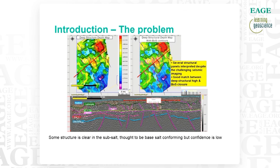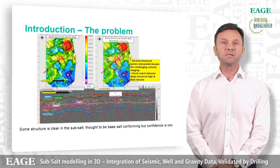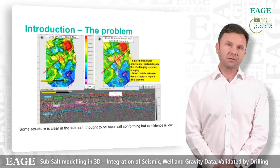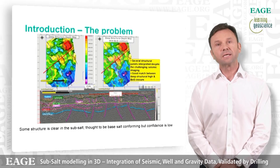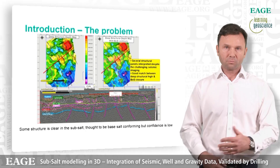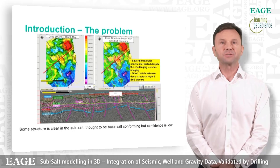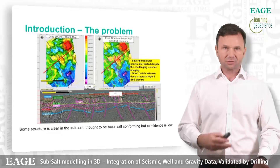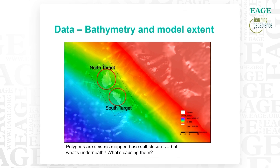This is a small example of one of those base salt closures, shown as the red structure in the top right-hand side of each of the top two maps, and a regional 2D section on the red line shown below. We can see that there's a closure at base salt that could possibly be prospective. But there is great uncertainty in this interpretation due to the uncertainty in which is salt and which is carbonate, and the velocities that are involved. So we start looking at other data.